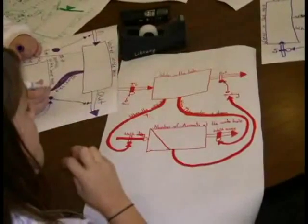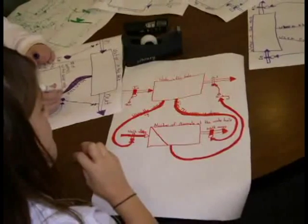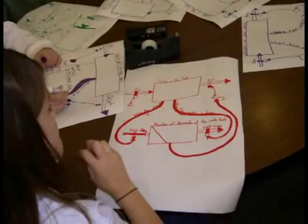This stock flow diagram shows that when the water is up the animals walk to the hole and when the water is low the animals walk away.